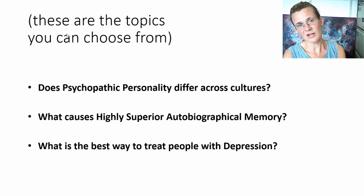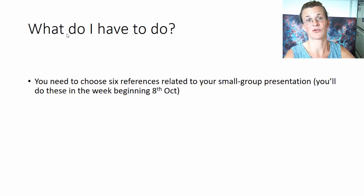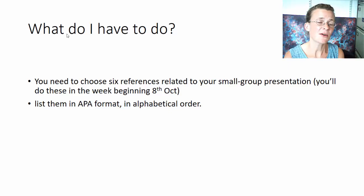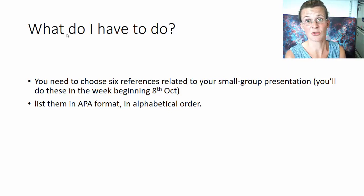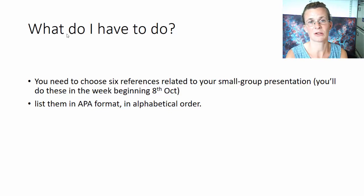Then, you have to write an annotated bibliography about six of those articles. You probably found a lot more, but you have to choose six that you find the most interesting. This is work you do on your own — the group presentation is in a group, the annotated bibliography is on your own. You need to list them in APA format, in alphabetical order, by author's surname.